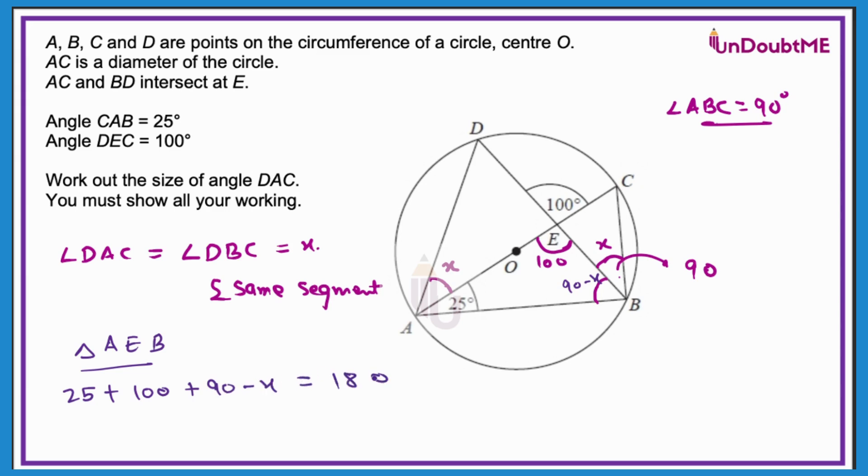So I'll just write 90 minus x and that is all equal to 180. Now from here if I just solve it then it will be 190 minus 180 plus 25 is equal to x. And just rearranging terms as per the sign, 190 minus 180 is 10, 10 plus 25 is 35. So the value of x is 35.